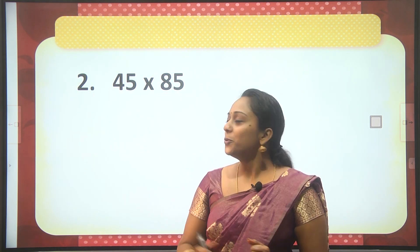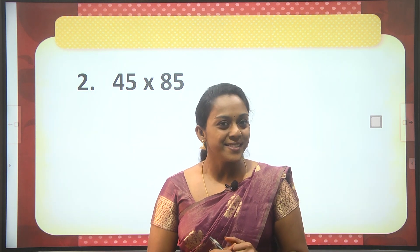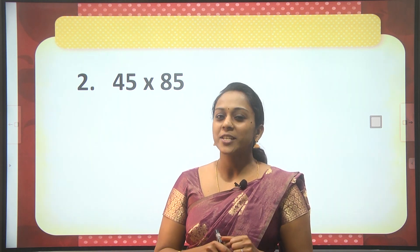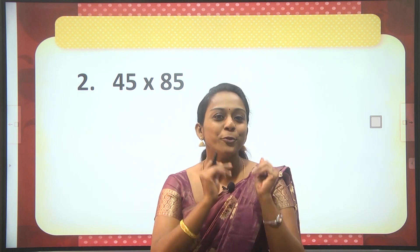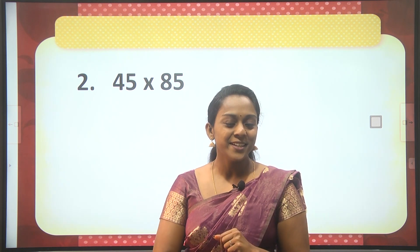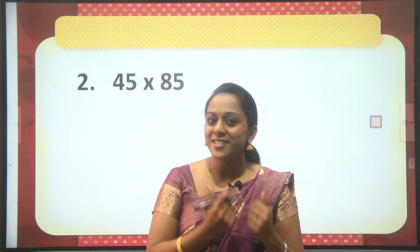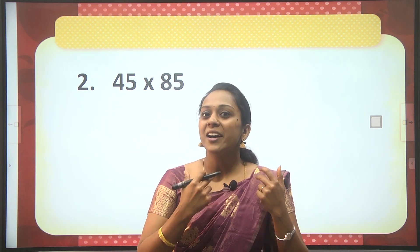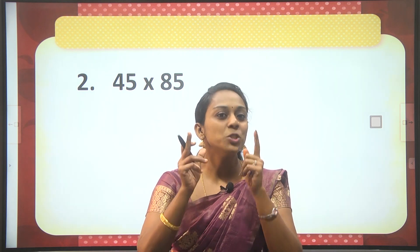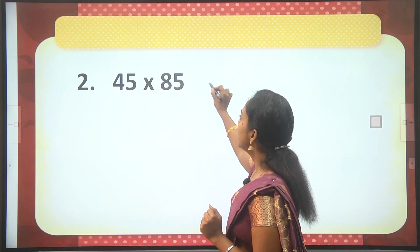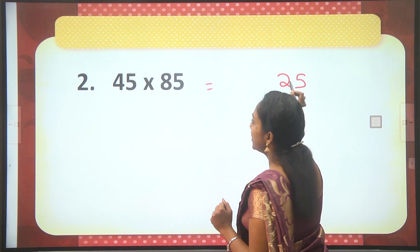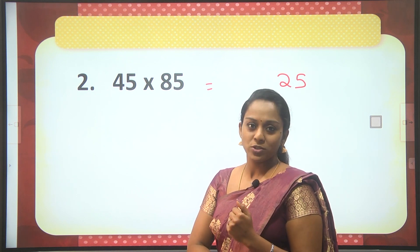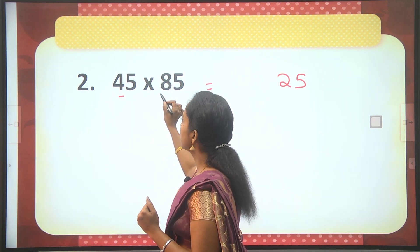Question number 2: 45 into 85. Both numbers end in 5, so focus on the digit just before 5 — that is 4 and 8. These two digits are even numbers. As previously mentioned, when both digits are even, your product will also end in 25.